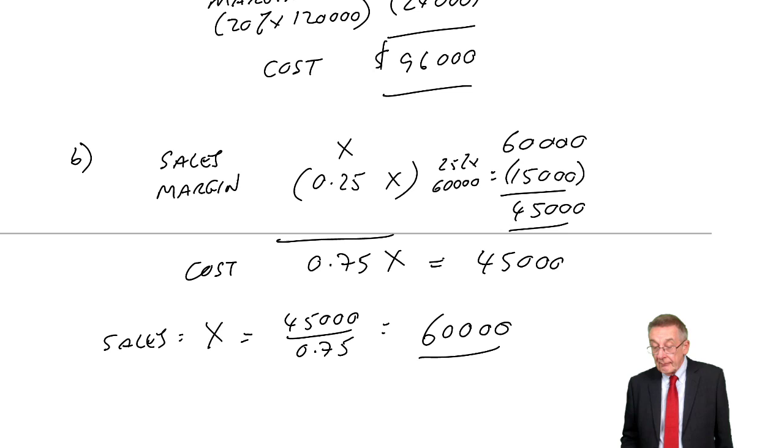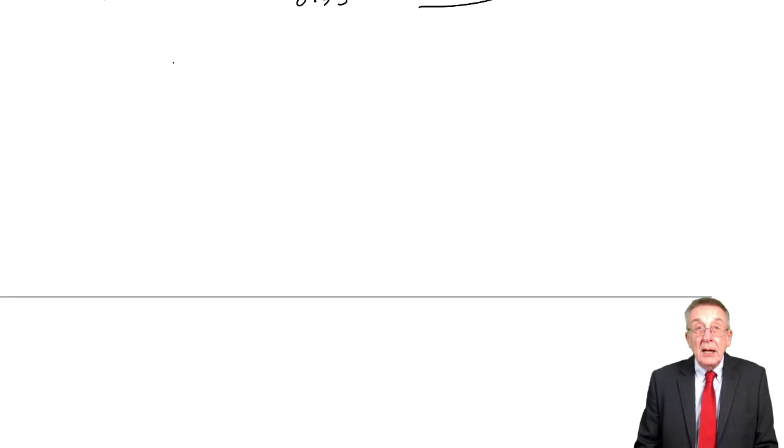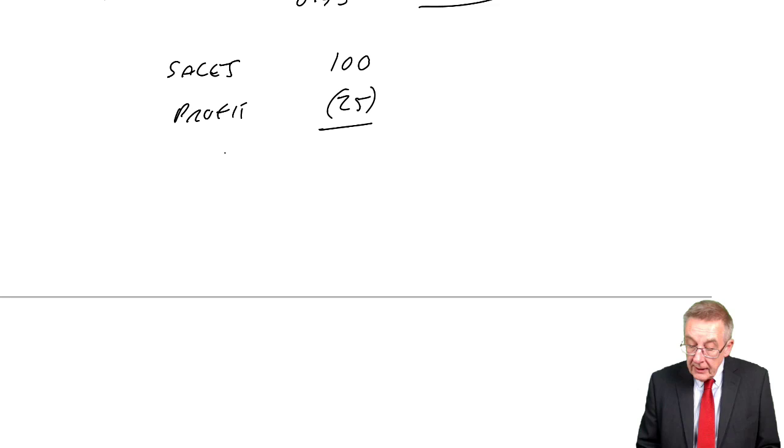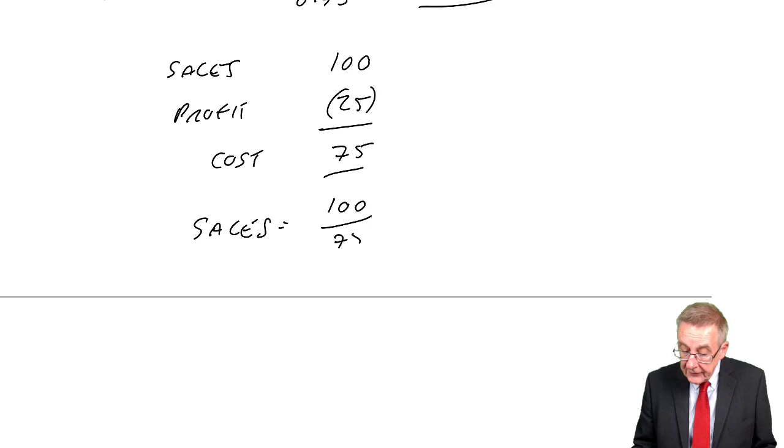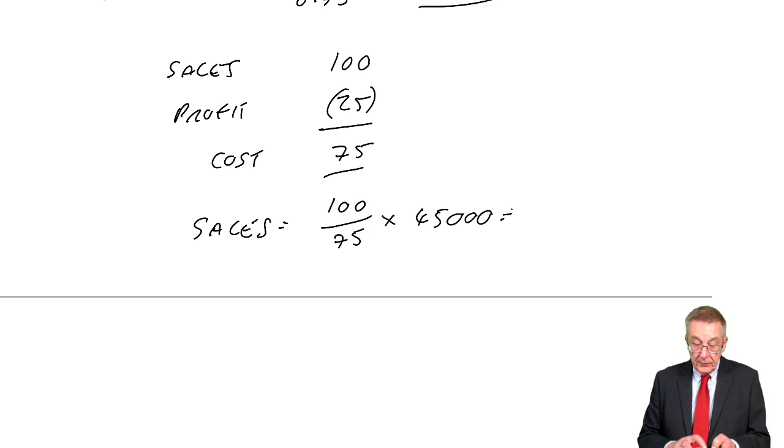If you don't like using X's, then say, OK, for every 100 sales, the profit, the margin, 25% of sales, which is 25. The cost will be 75. And therefore, for every 75 cost, the sales will be 100. So the sales will always be 100 for every 75 of the cost. Cost is 45,000. And 100 divided by 75, that's 45,000, 60,000.